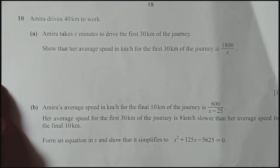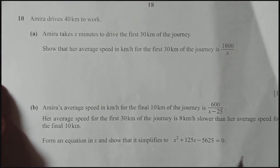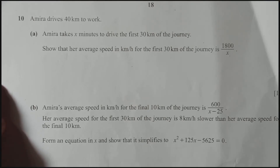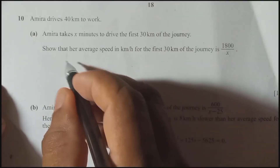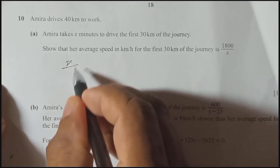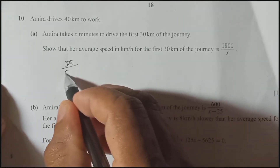If you have 60 minutes and convert to hours, that means 60 divided by 60 gives 1 hour. If you have 120 minutes, divide by 60; 180 minutes divided by 60 gives 3 hours. So any number of minutes — you divide by 60 to convert to hours. Therefore X divided by 60 gives you the time in hours.